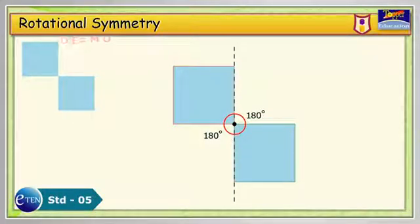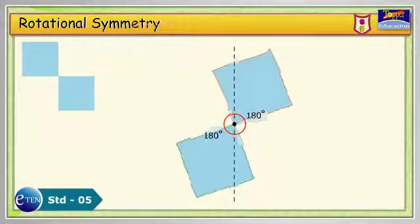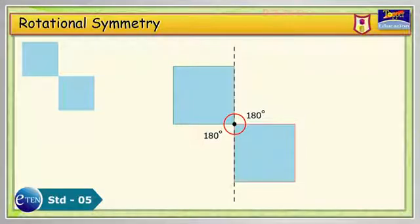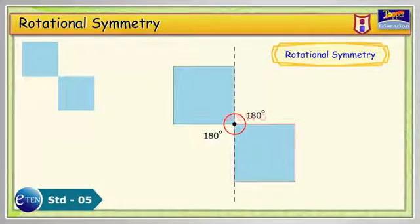This means that when we rotate the pattern and get at least one exact same pattern compared to its original pattern during the complete rotation, then it is called rotational symmetry.